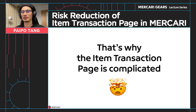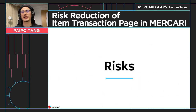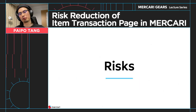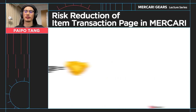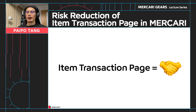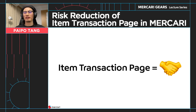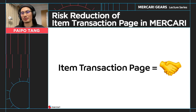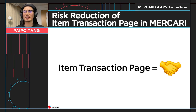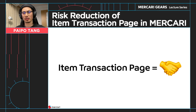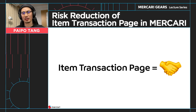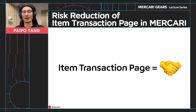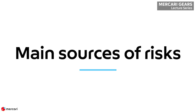Now you know the secret of the item transaction page. Next, let's get to the topic of risks. The first question you might ask is: why does a page even have risks? Having risks means it's an important page and we don't want to make mistakes. Item transaction page is important to Medi-Kali mainly because the main revenue and deals come from this page. So if item transaction page breaks, Medi-Kali will probably lose deals and a lot of business opportunities. In order to reduce risk, let's first recognize the main sources of risk, which I categorize into two.